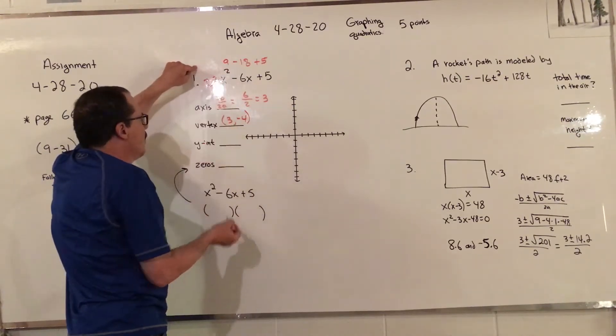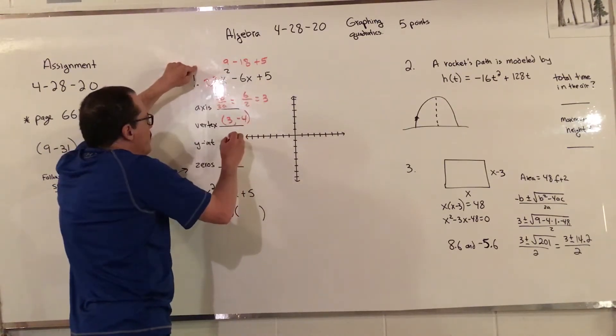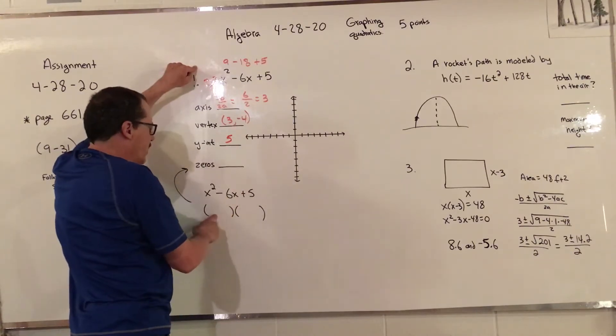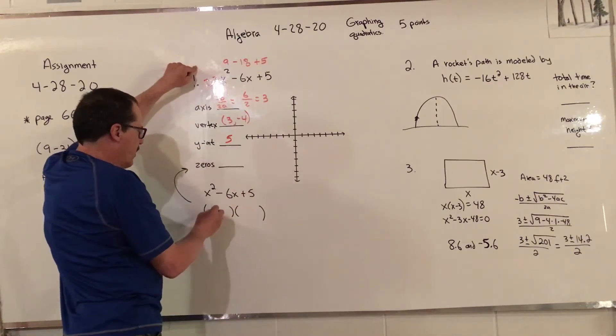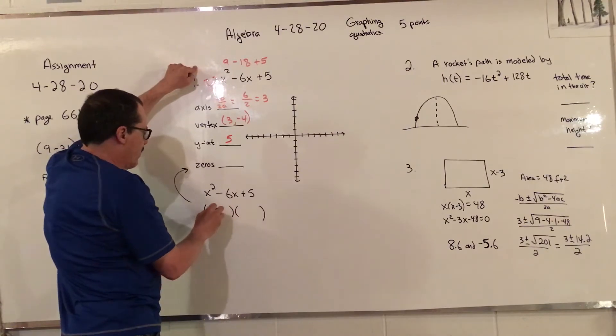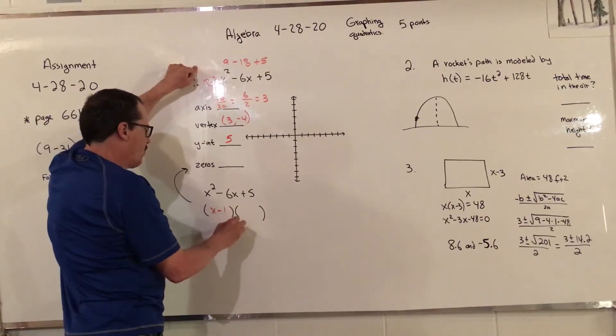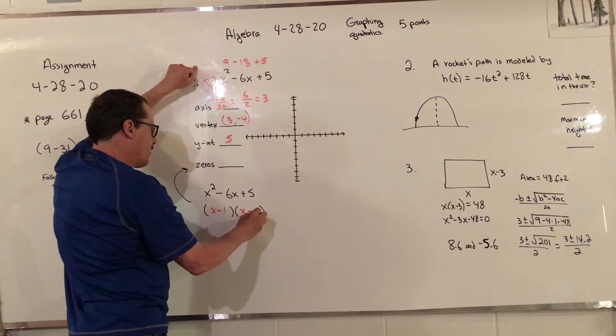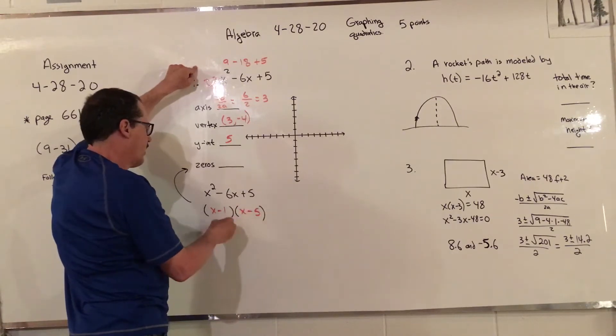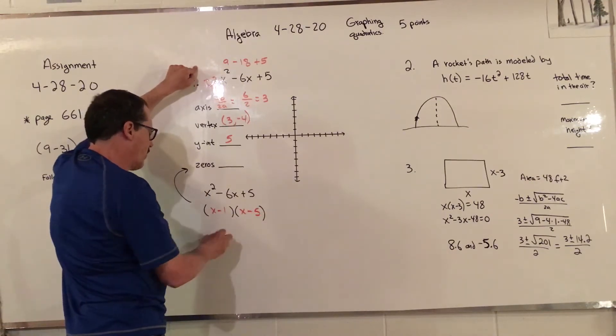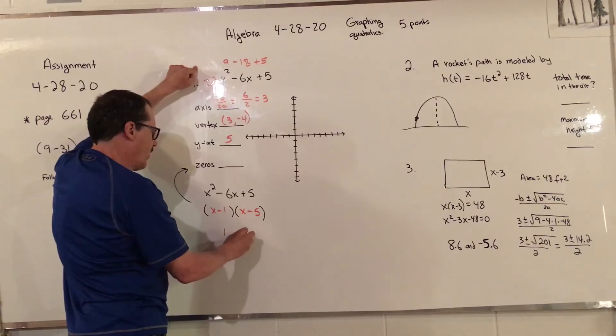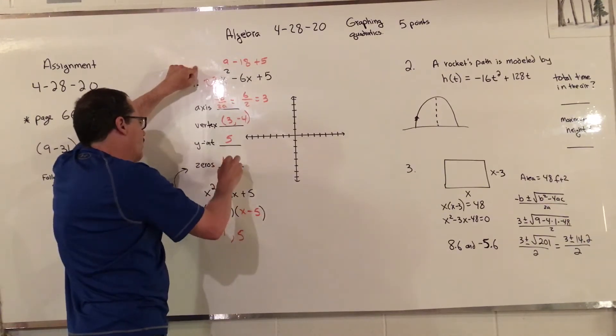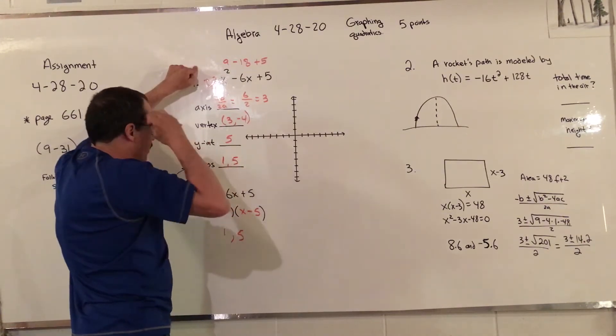The y-intercept is the last number, so that's 5. The zeros I need to factor to find. I'll make it so that on your quiz it will factor. This would be X minus 1 and X minus 5. So my zeros are 1 and 5.